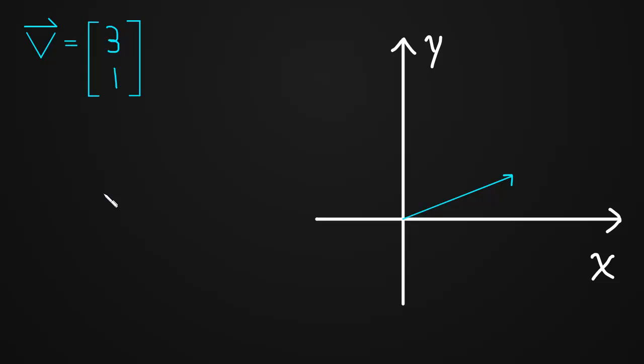Let's find the length of v equal to 3, 1. But before we do that, let's just get some notation out of the way. When we're talking about the length of a vector, we write these double bars around it, almost like a double absolute value around the vector. And now this is read the length of v.